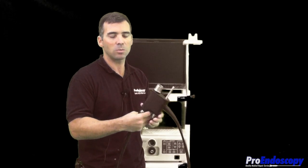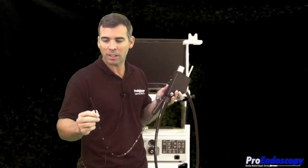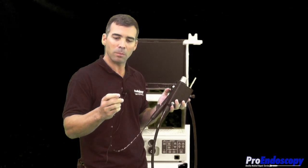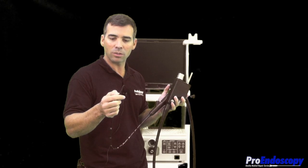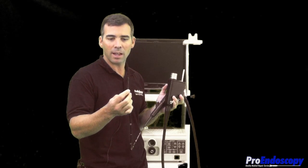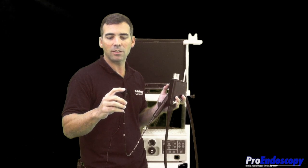This customer sent this scope to us for service and repair. Their angulation was damaged at the distal tip over here where the angulation is. Their bending rubber also had a tear in it, so we replaced that. But a lot of times that happens during procedure or their biopsy channel gets damaged as well.